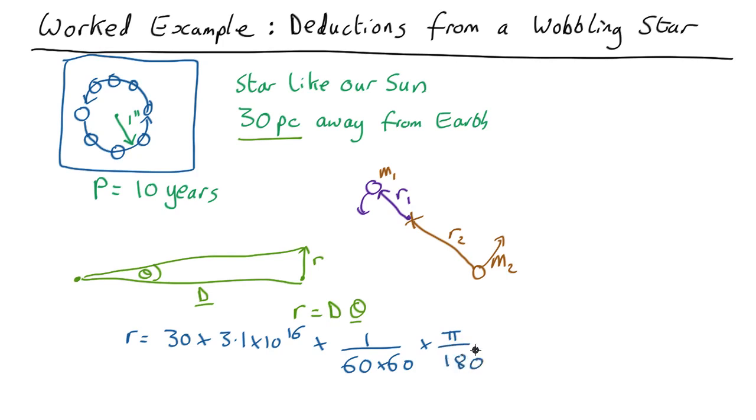And if you factor all that in it turns out that the radius of the orbit is about 4.5 by 10 to the 12 meters.